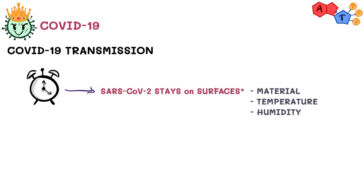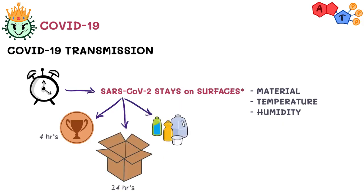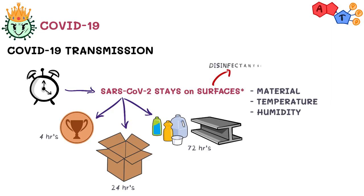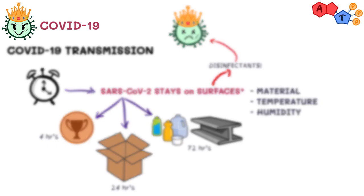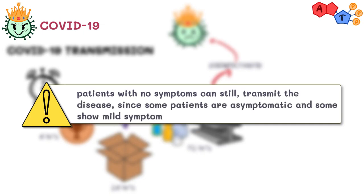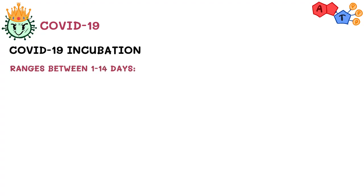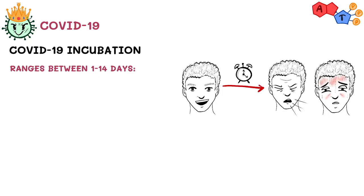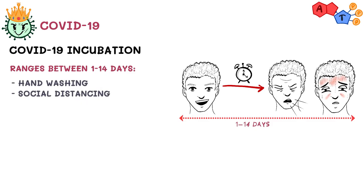A published study showed that SARS-CoV-2 can stay on copper for up to 4 hours, cardboard for up to 24 hours, and on plastic and steel for up to 72 hours. If the surface is not clean, take the lead and clean it yourself with simple disinfectants — this should kill the virus. Most importantly, keep in mind that patients with no symptoms can still transmit the disease, since some patients are asymptomatic or show mild symptoms, so you have to be careful. Incubation period for COVID-19 ranges between 1–14 days, meaning from the time of exposure to SARS-CoV-2 until you show symptoms it can last up to 14 days. This highlights the importance of continuous hand washing and social distancing, so you don't unknowingly contract COVID-19 from someone in their incubation period.